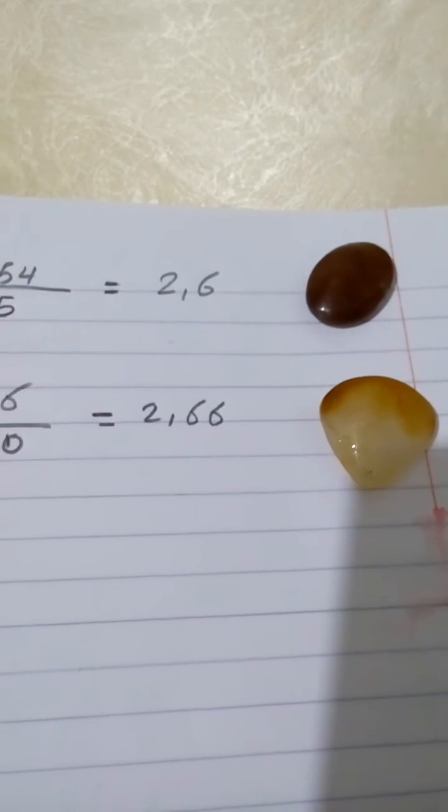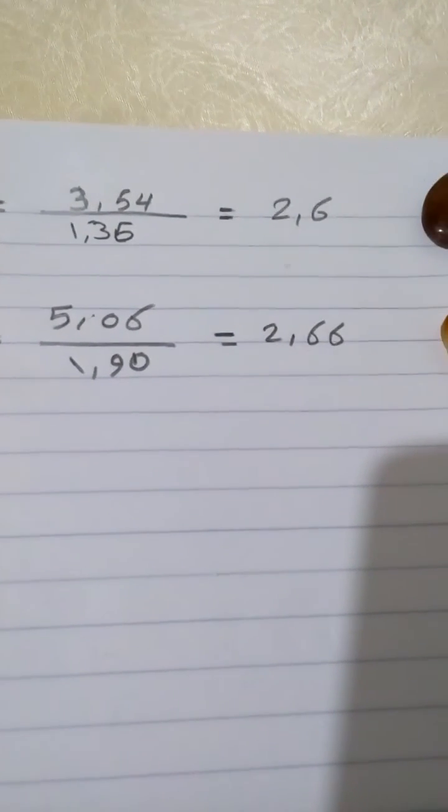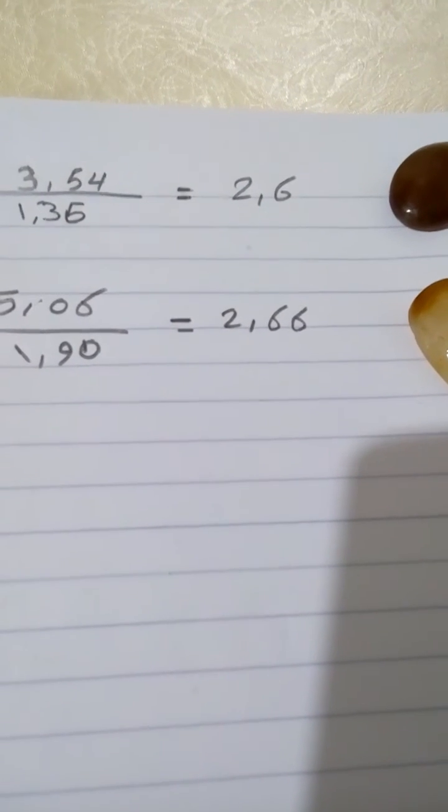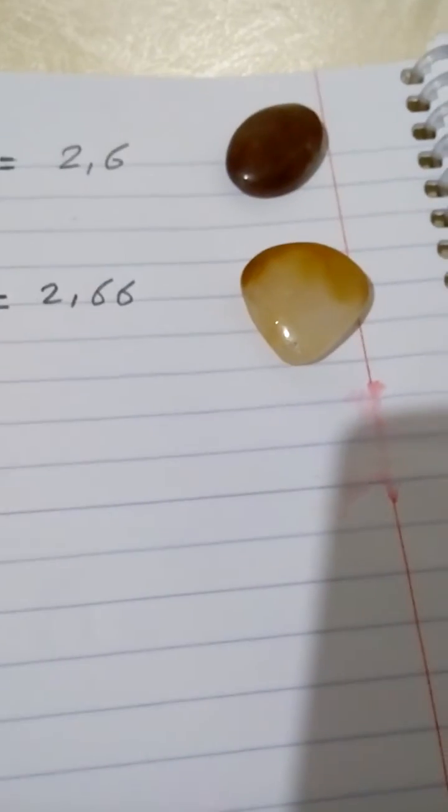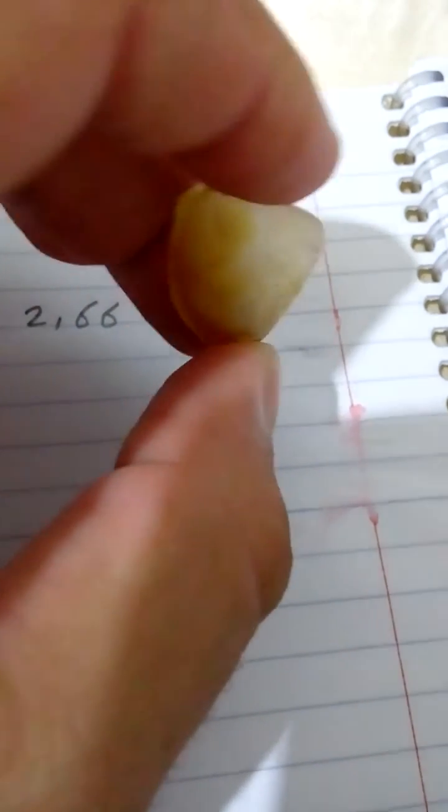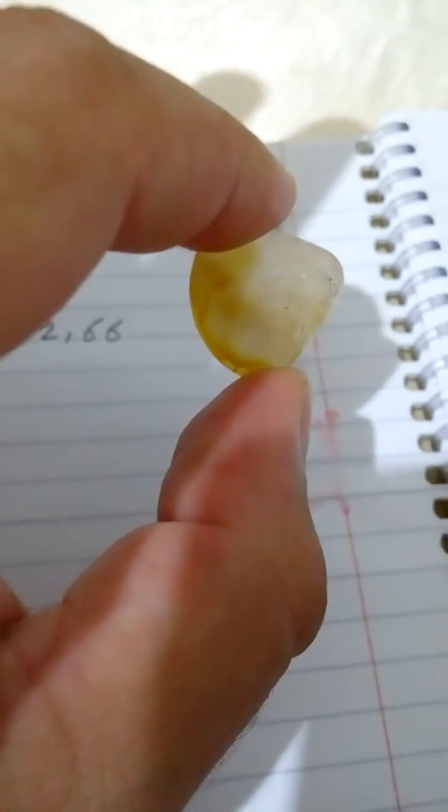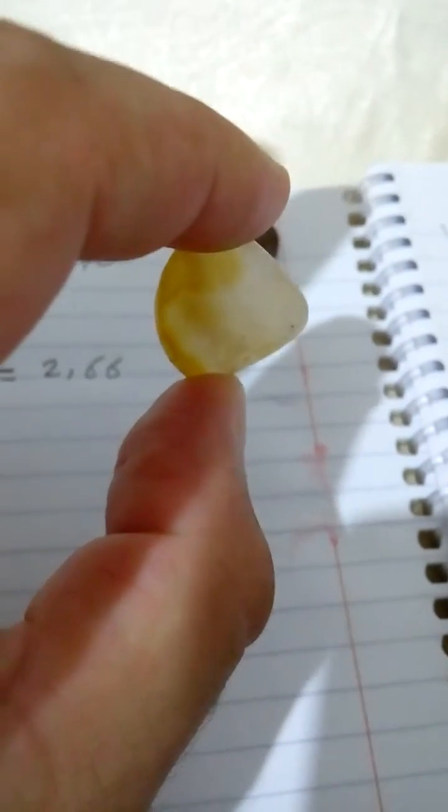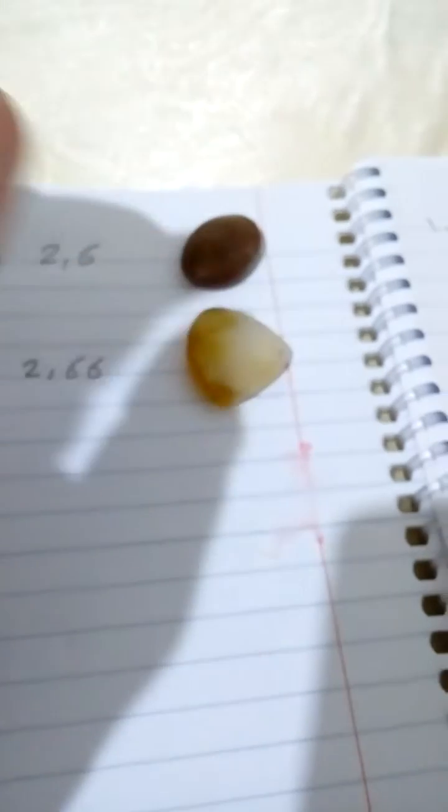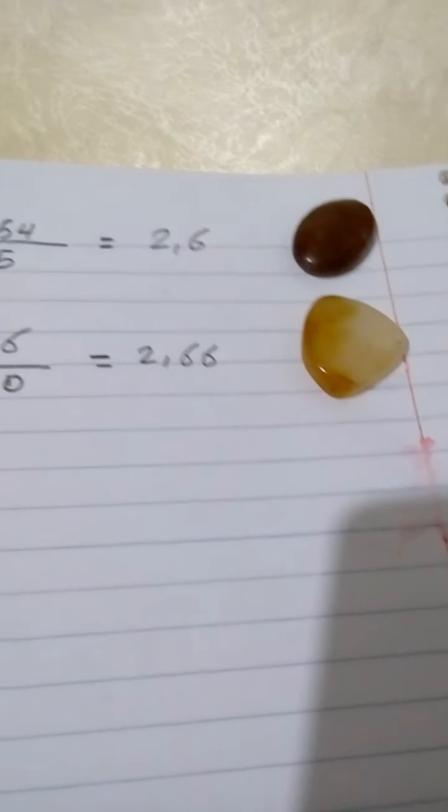The second stone, we have found that its density is 2.66. We know that the quartz stones, which contain also amethyst and citrine—citrine is a yellow, orange quartz—these stones' density are in the range from 2.65 to 2.70.